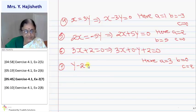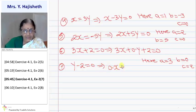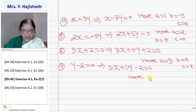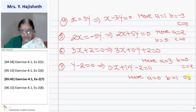Next question is y minus two equals zero. Its general form is zero times x plus one times y minus two equals zero. So here coefficient of x (a) is zero, coefficient of y (b) is one and constant term (c) is minus two.